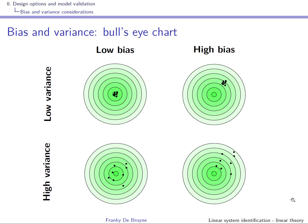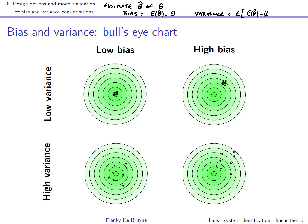Before we talk about bias and variance considerations, let us review the concept of bias and variance. We assume we have an estimate theta-hat of some variable theta. The bias is the expected value of theta-hat — the average value — minus the actual value of theta. So it's the error that you make on average. The variance is the expected value of theta-hat minus the mean of theta-hat, squared. So it's the variation you have around your average estimate.